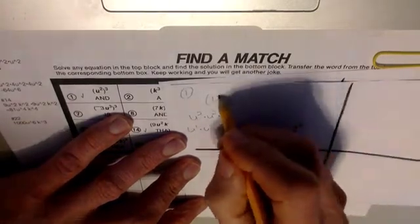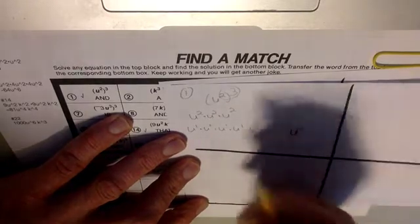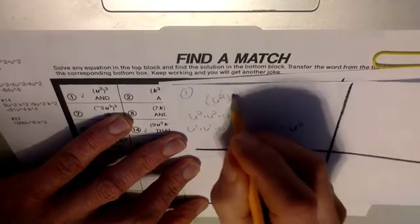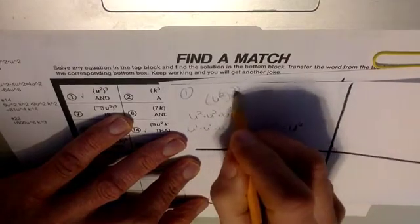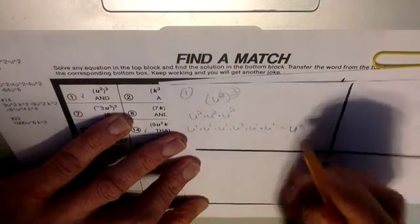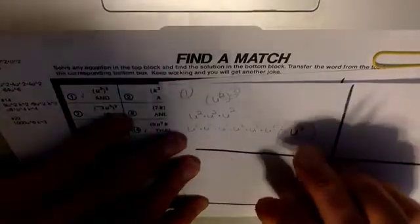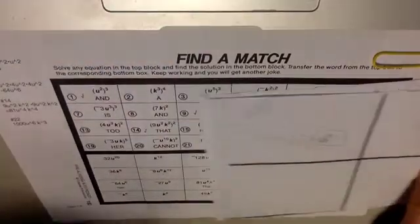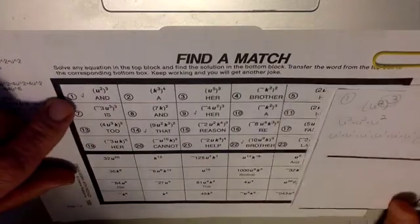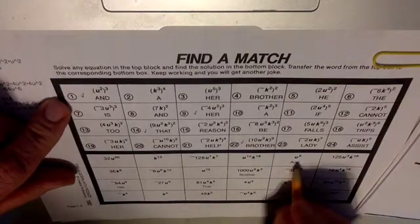Do you notice anything between the two and the three and the six? If you figured out a power to a power, you're actually going to multiply the powers. So three times two is six — three twos is six. That's a little shortcut, but practice the long way first and see if you can get there. So u squared to the third power is u to the sixth power, and I put that down here.